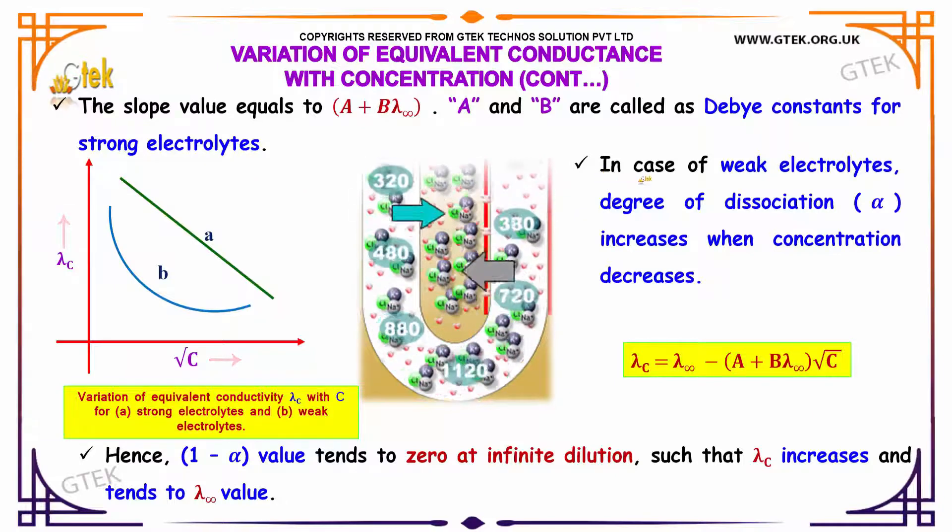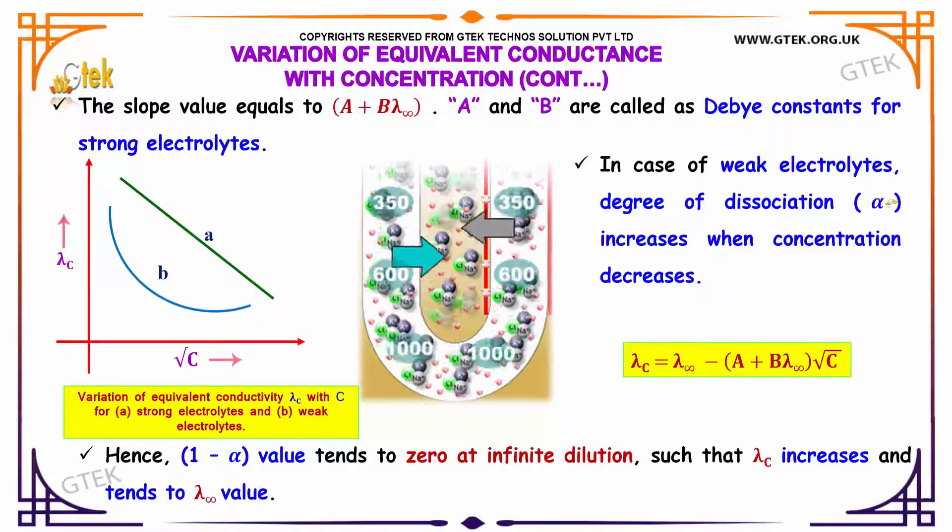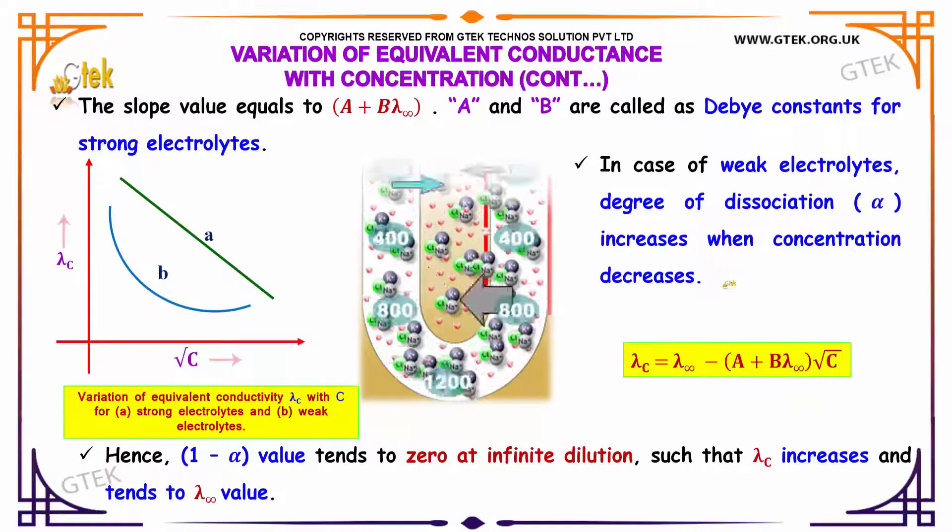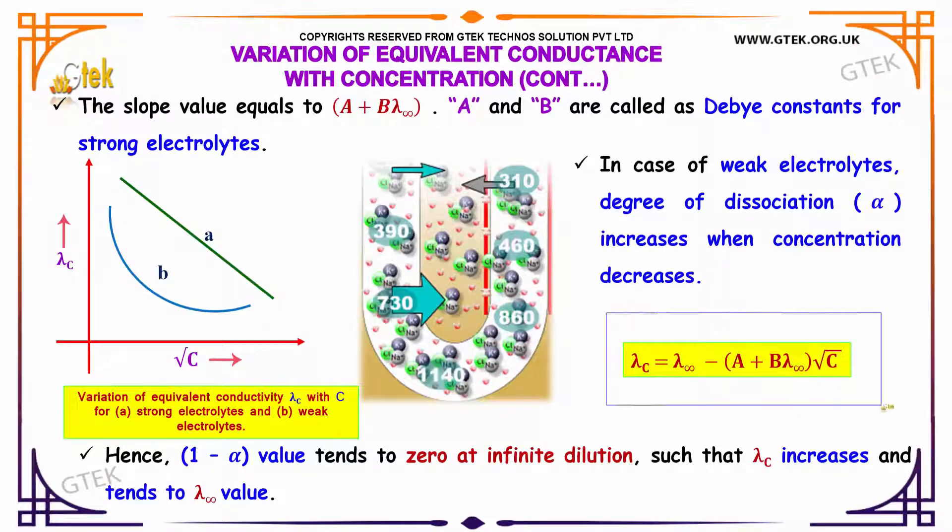In case of weak electrolytes, degree of dissociation alpha increases when concentration decreases. Lambda c equals lambda infinity minus A plus B lambda infinity multiplied by root c.